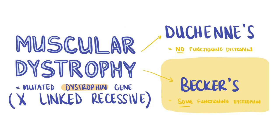Becker muscular dystrophy is a less severe form of muscular dystrophy. In Becker's, a mutation in the dystrophin gene causes misshapen dystrophin to be formed. Onset of symptoms happens at a later stage.